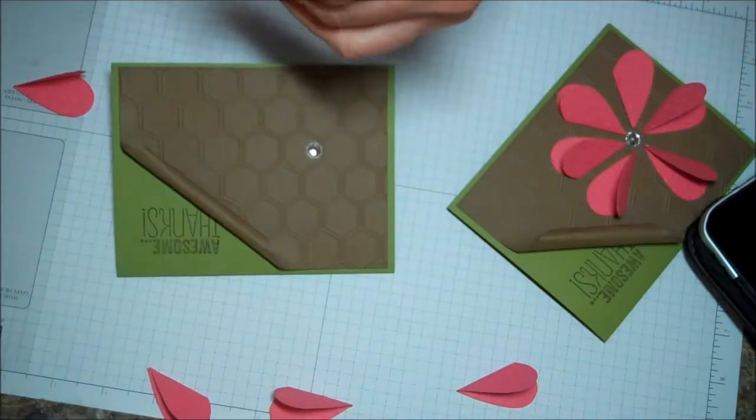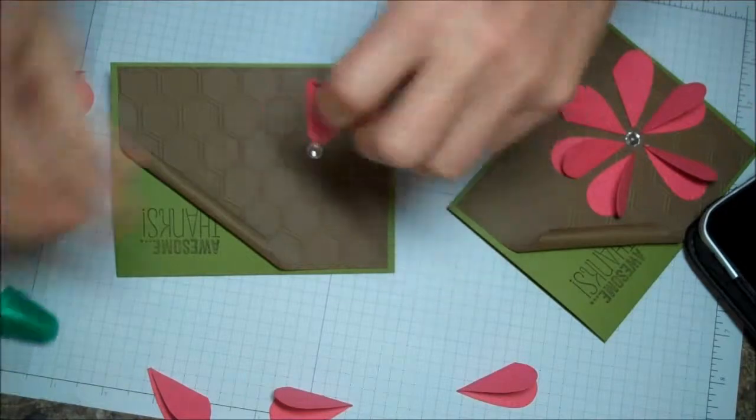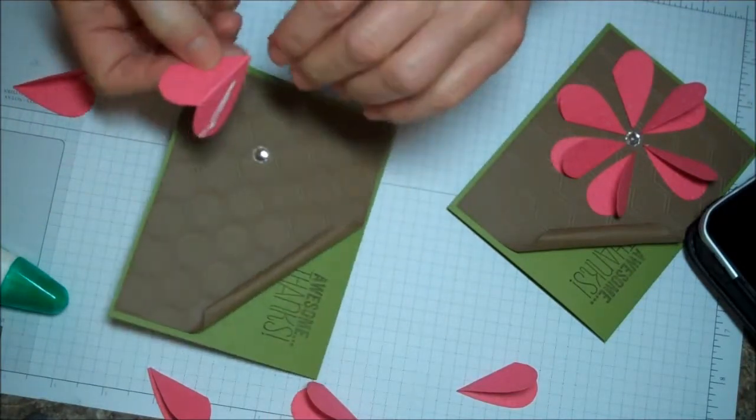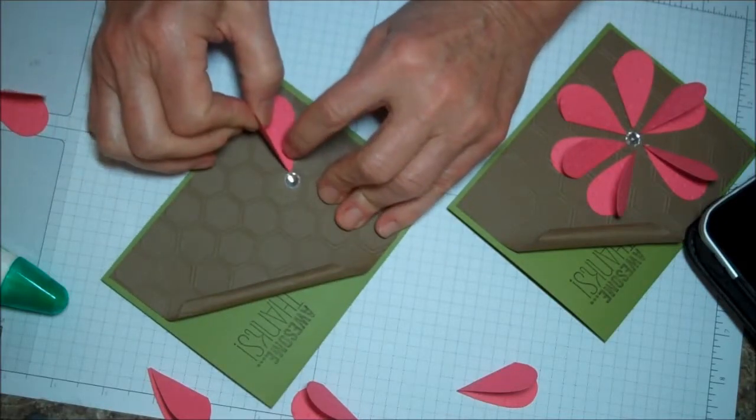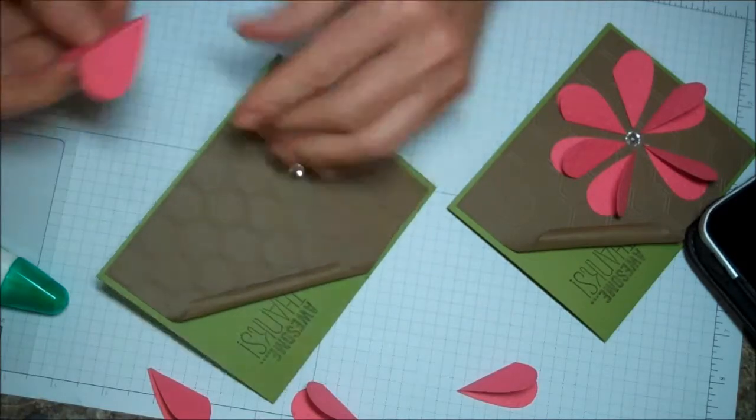So then you just start gluing the hearts down. Making sure that the fold is facing the same way all the way around, and that the top of the heart is facing out.